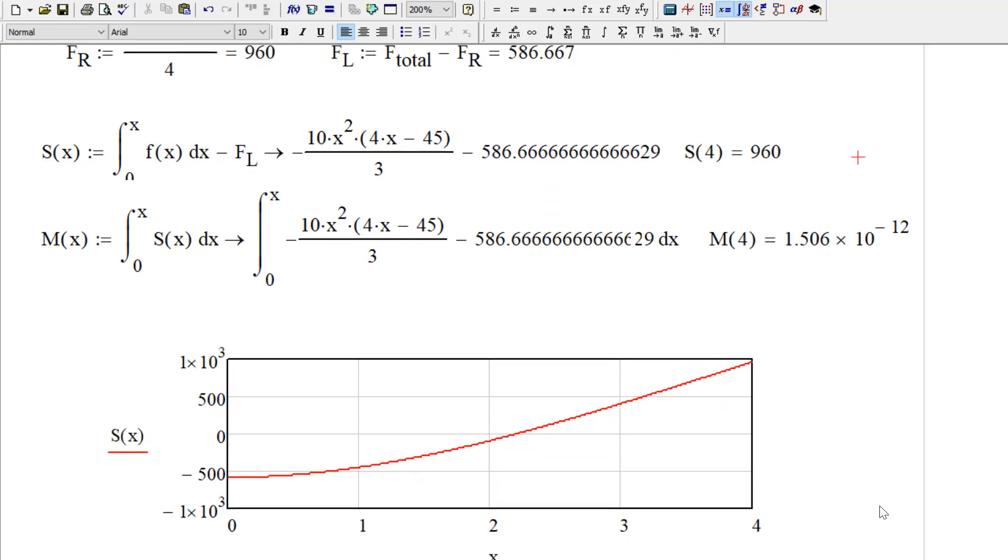So let's plot those out now. Here's the shear diagram, very much like what I drew on the board. And you can see we go from minus 586.667 up to 960 on that end. All right. So slope is pretty much zero. Slope goes up to some positive semi-constant number.